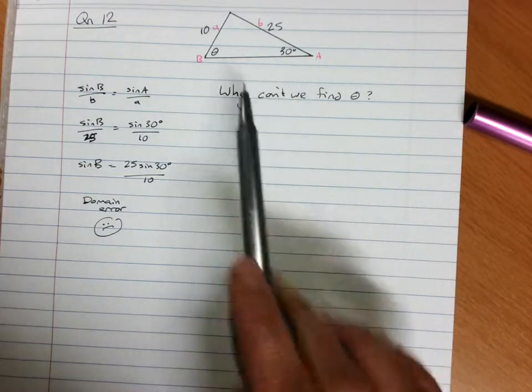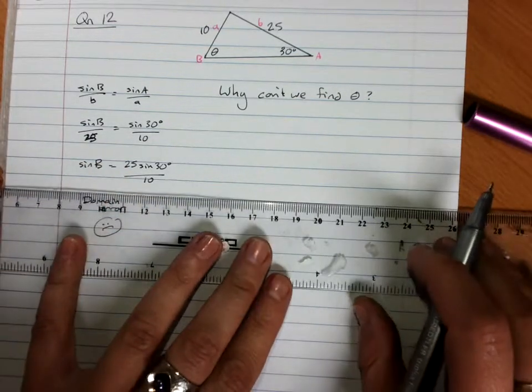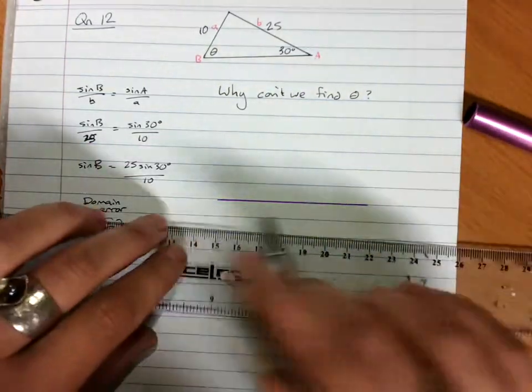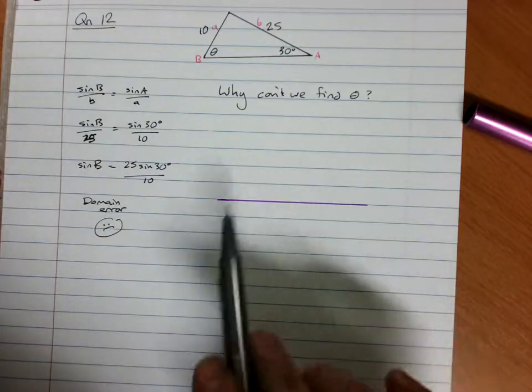Now it doesn't tell us what this length AB is, so we'll just give that a straight line of undetermined length, and we'll see how much of it we use.